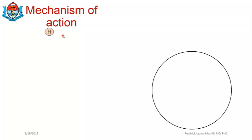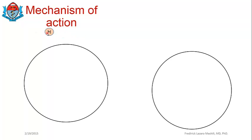So the mechanism of action: we have a hormone and we have a receptor. The hormone will bind to a receptor to form what is called a hormone-receptor complex. When a hormone-receptor complex is formed, that means the hormone has taken its message inside the cell.